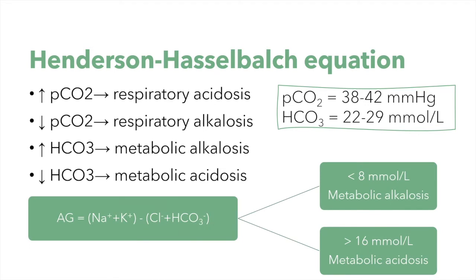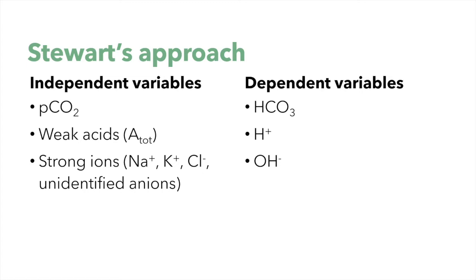To outline metabolic alteration, still based on this approach, we can calculate the anion gap. The principal problem of this approach is that bicarbonate is calculated from the pH and the pCO2, so it's always a secondary change. The advantage of relying on this method is that it's quick and easy, but the disadvantage is that it's more descriptive than mechanistic, because it fails to distinguish between dependent and independent variables.